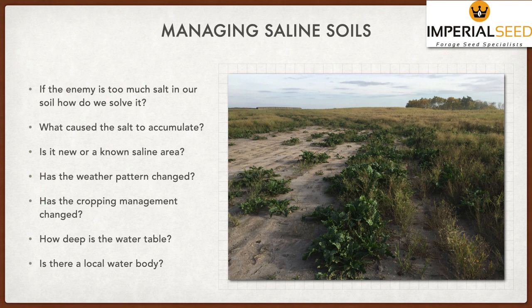Has our cropping management changed? Are we doing more tillage, less tillage? What crops are we growing? When are they using water, how much water do they use, and what kind of root system do they have? Those will influence the salinity change. How deep is the water table — are we dealing with a deep or shallow water table? And is there a local body of water that is creating saline development?